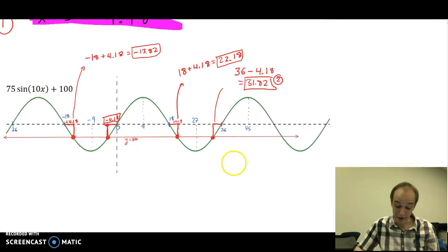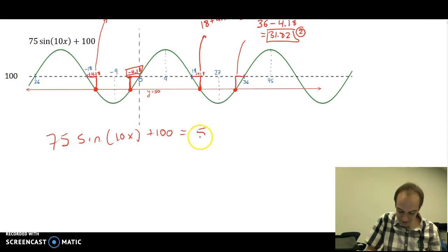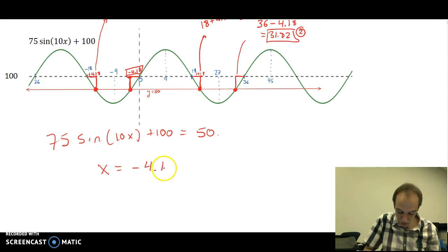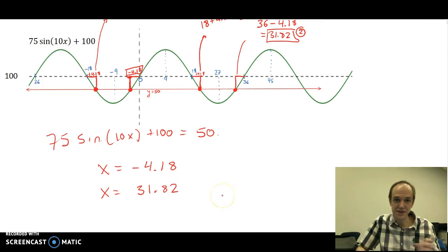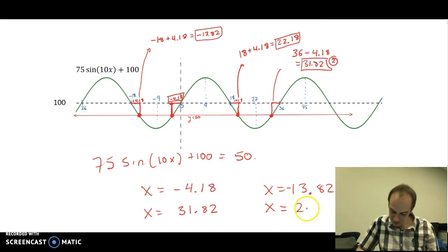So in summary, we started out with the equation 75 sine of 10x plus 100 equals 50. We solved it and got x is negative 4.18. Then we added the period of the function on to find another answer and we got x is 31.82. Then we use the symmetry of the function to find our answers on the other side of the dip. And we got x is equal to negative 13.82. That was this answer here. And we got x is equal to 22.18.